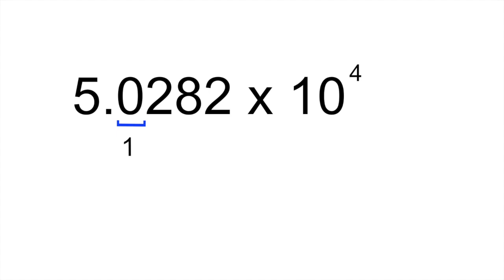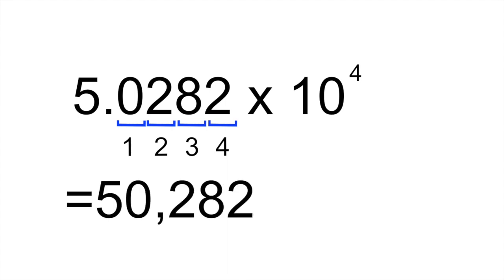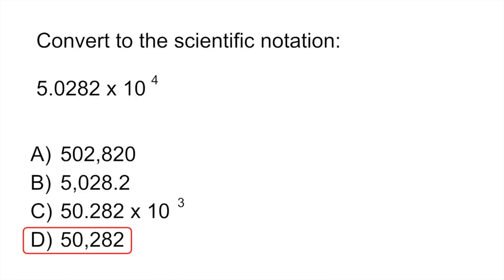And because the exponent is 10 to the fourth, that means we're moving our decimal point to the right four times. So that would be one, two, three, and four. If you now move that decimal point, you end up with 50,282, which is answer D.